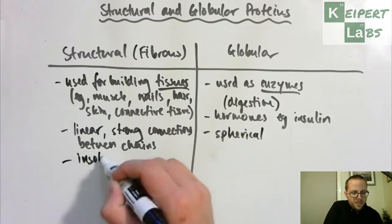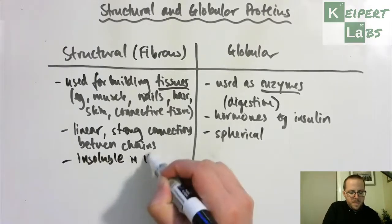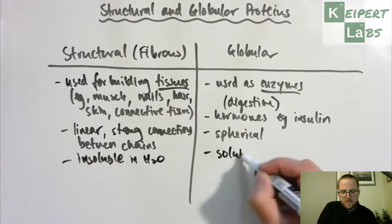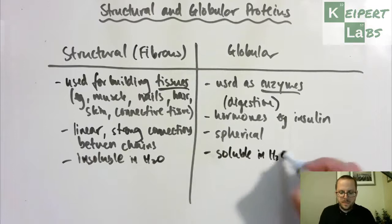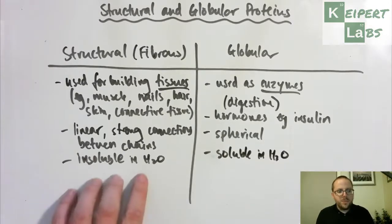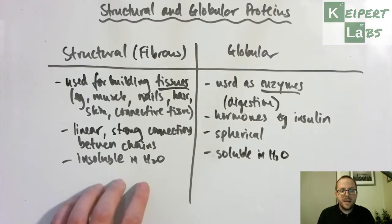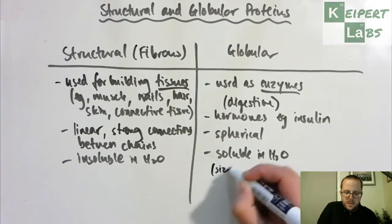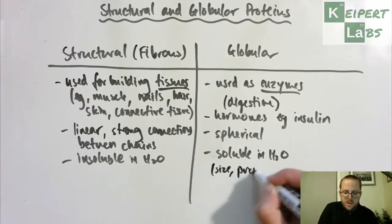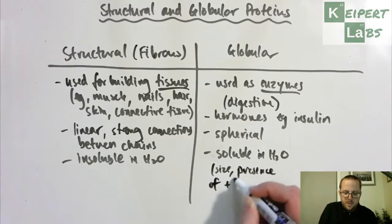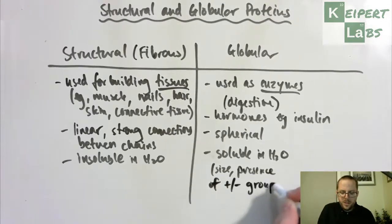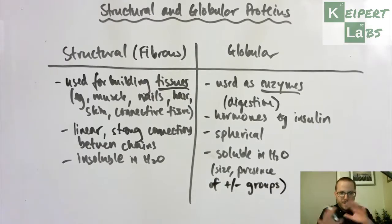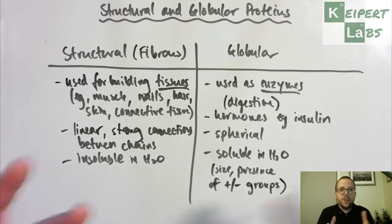Structural proteins are insoluble in water, whereas globular proteins are soluble in water. The insolubility of structural proteins comes down to the way that the chains kind of pack and connect together. Whereas the solubility in water over here relates to size and also the presence of positively or negatively charged groups on the outside of the chains, or outside of the molecule. So that they're oriented towards the outside, which interact very effectively with water molecules and are surrounded by water molecules very, very well.